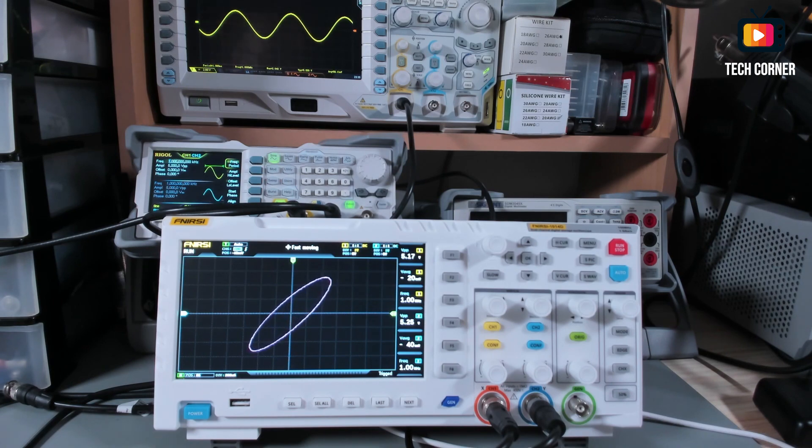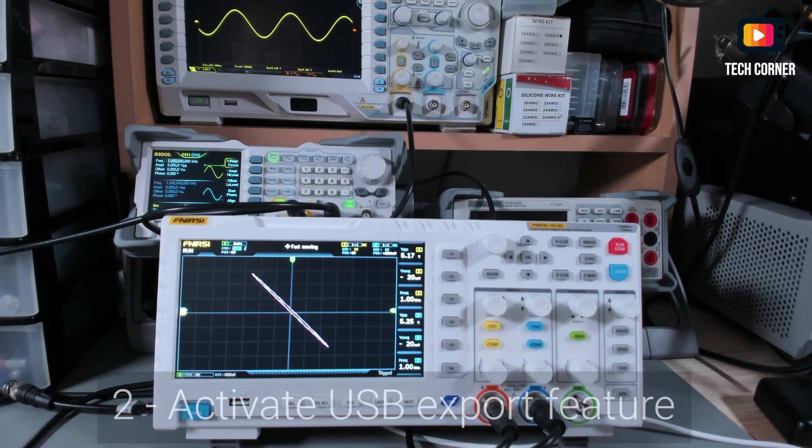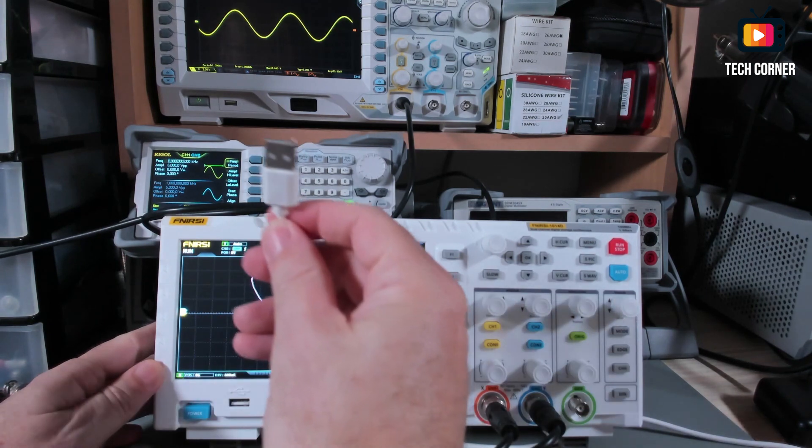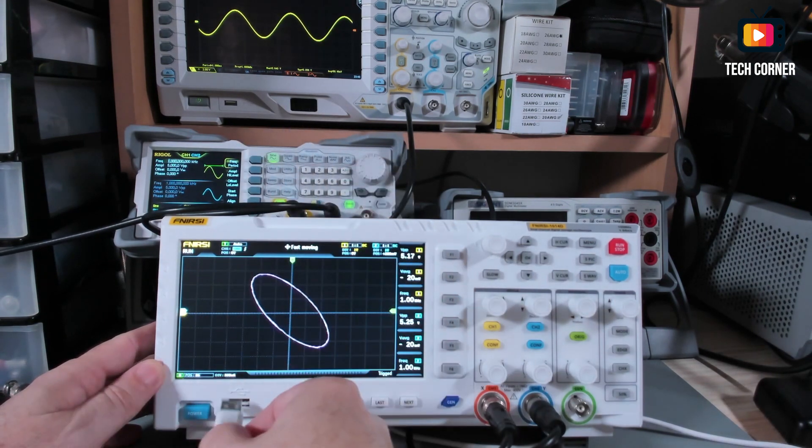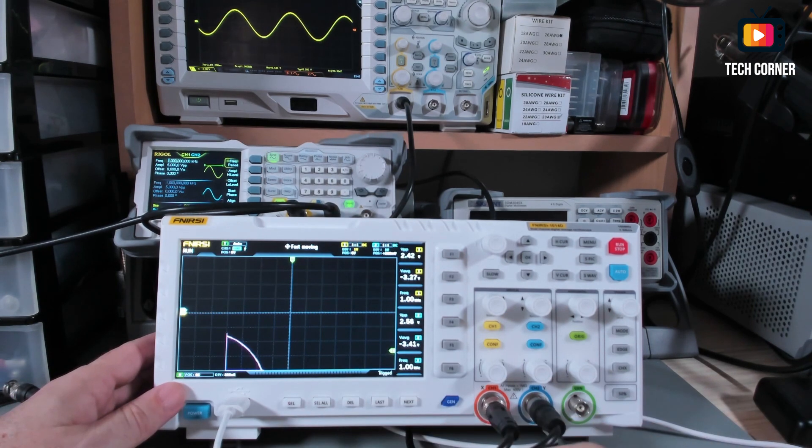Okay now that we already downloaded the firmware the next step is connect the data cable to the PC and to the USB port of the oscilloscope.